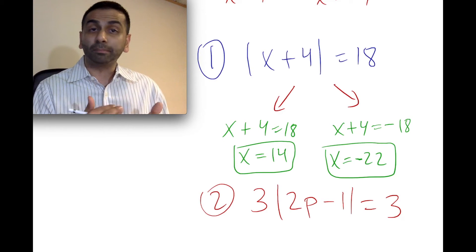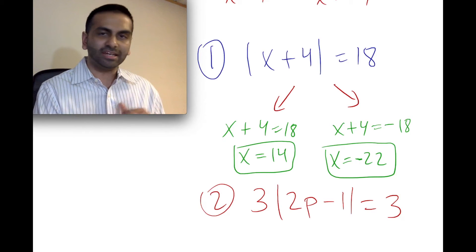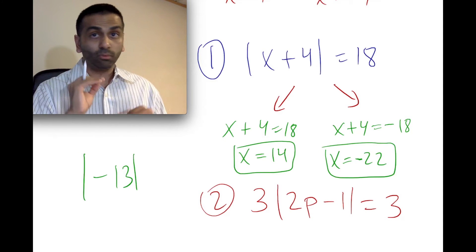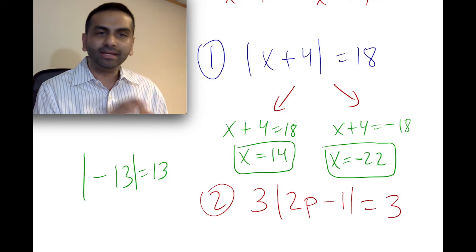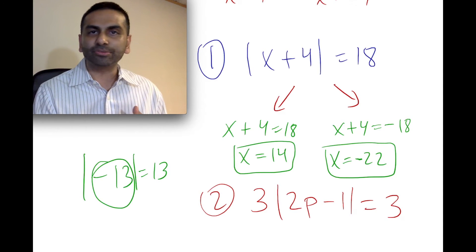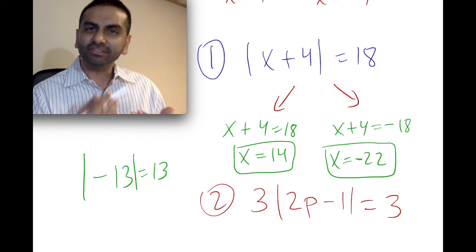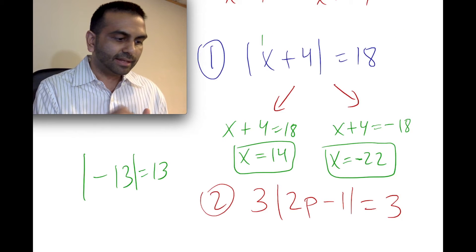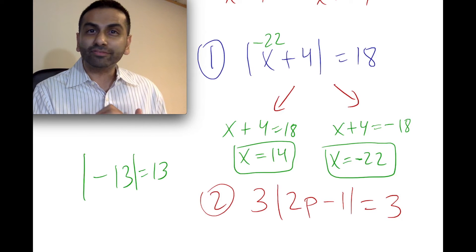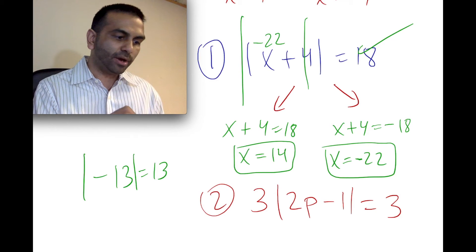Now let's plug the answers back into the original expression to check. When evaluating an absolute value, if there's a negative number inside, it equals the positive version of that number. Applying x equals 14: 14 plus 4 is 18, and the absolute value of 18 is 18 — that checks out. Plugging in x equals negative 22: negative 22 plus 4 is negative 18, but the absolute value of negative 18 is positive 18. So that checks out too, and we're 100% sure we did that right.